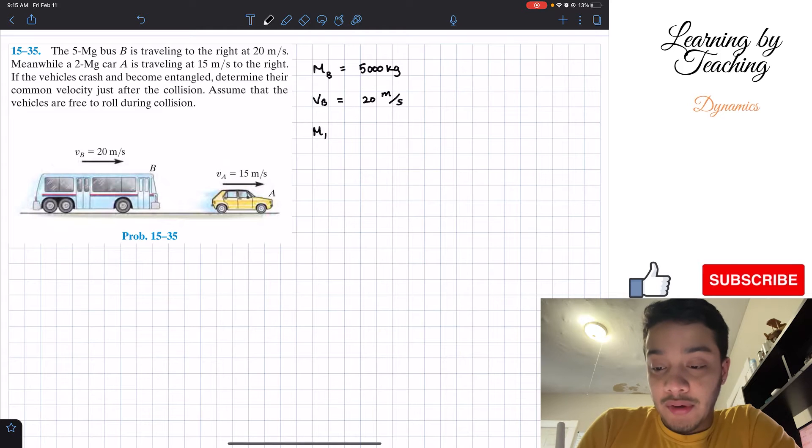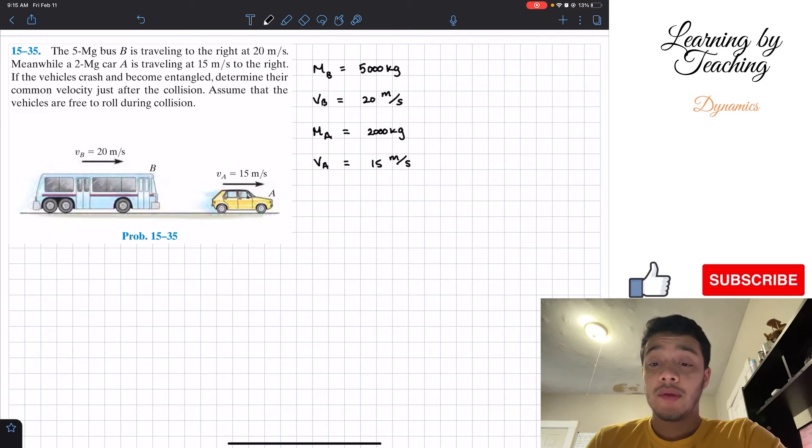Then afterwards, they're giving us the mass of my car A is equal to 2 megagrams. So again, if we convert it, it's going to be 2000 kilograms. The velocity of my car A is equal to 15 meters per second. Alright, so this is all I'm given.